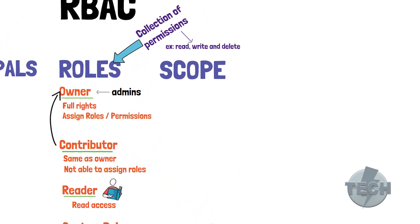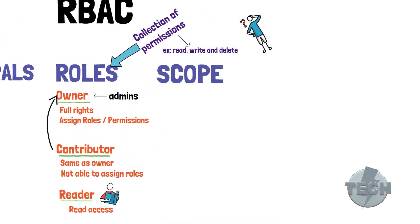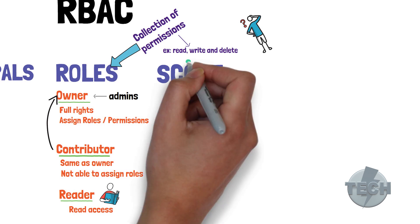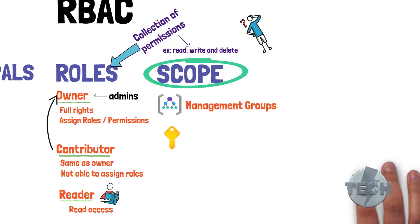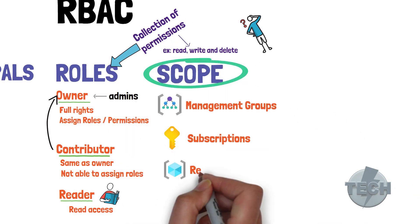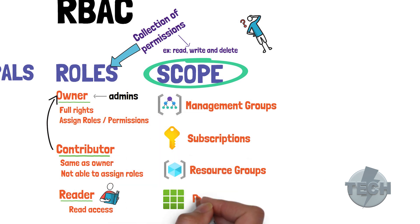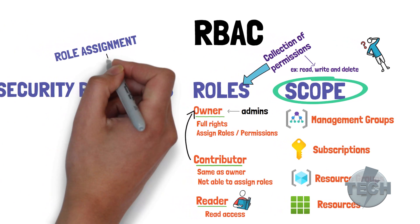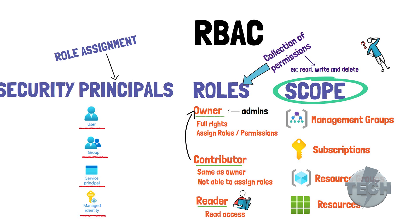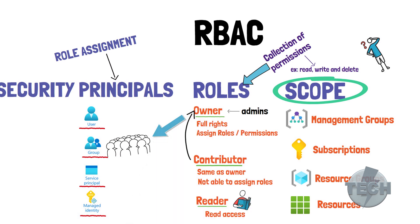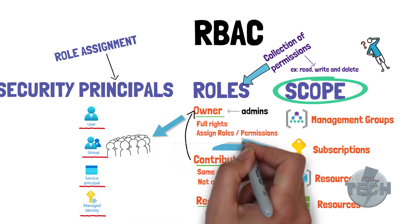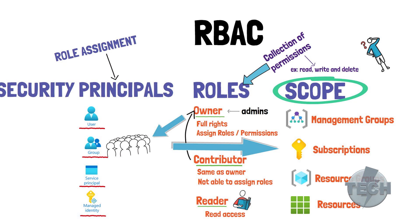Where do roles have permissions? Well, that's where the scope comes into play. In Azure, you can define the scope on four different levels: management groups, subscriptions, resource groups, and resources. Role assignment means that you attach a role to a security principle. This way you can, for example, grant a group access to manage an entire subscription or just a resource in a resource group.